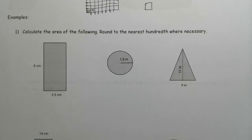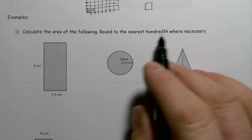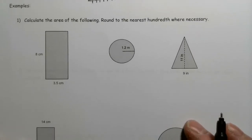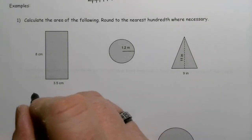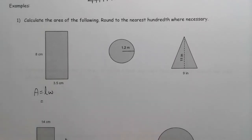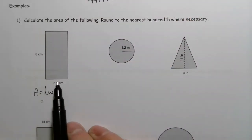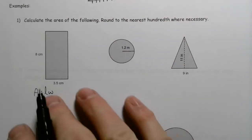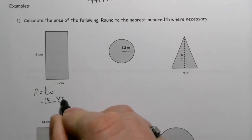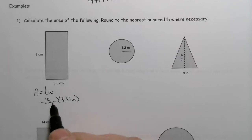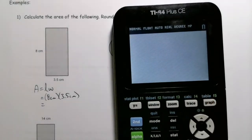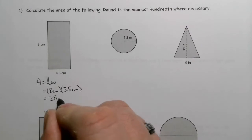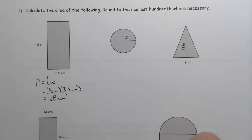You'll want to pull out your calculator. We're going to calculate the area of the following shapes, rounding to the nearest hundredth where necessary. First, a rectangular area: the area of a rectangle is length times width. So this is 8 centimeters multiplied by 3.5 centimeters, which gives us 28 square centimeters to cover that particular rectangle.